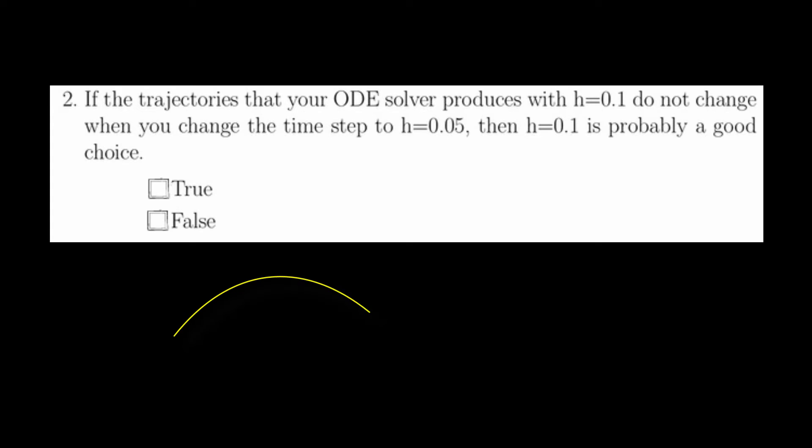This is equivalent to saying, if you take one step with one step size versus taking two steps with half the step size, if you get to the same point, there's no point in taking two steps, you're just doing extra work. In this circumstance, h equals 0.1 was probably sufficient. So this question is true.